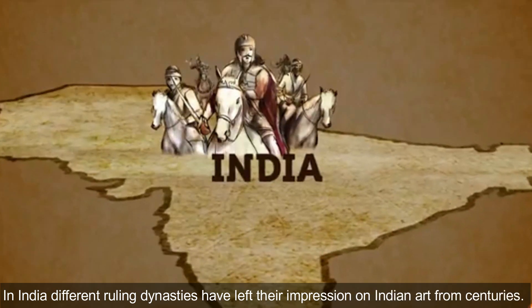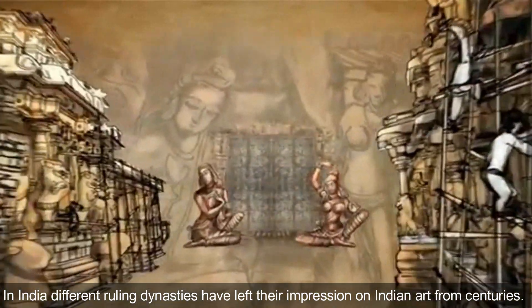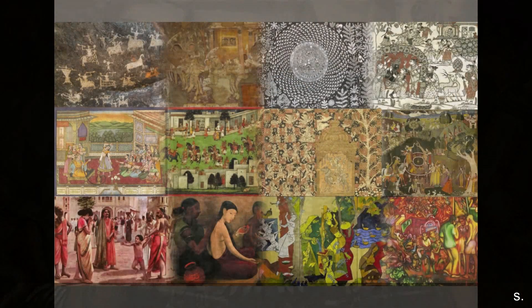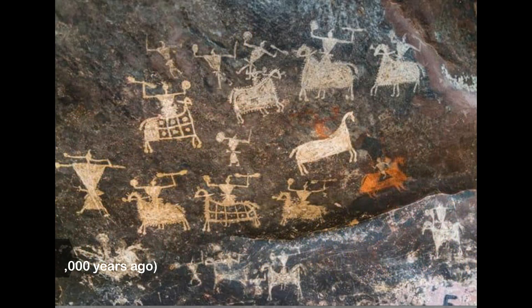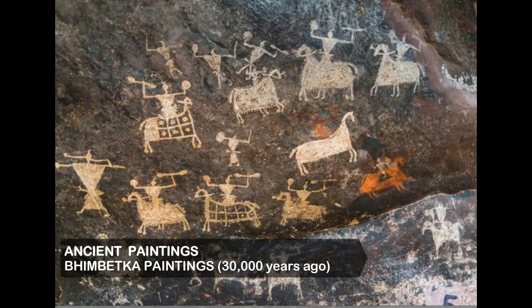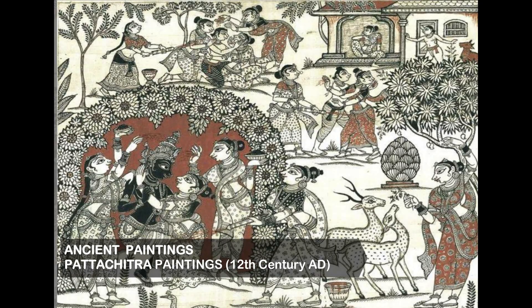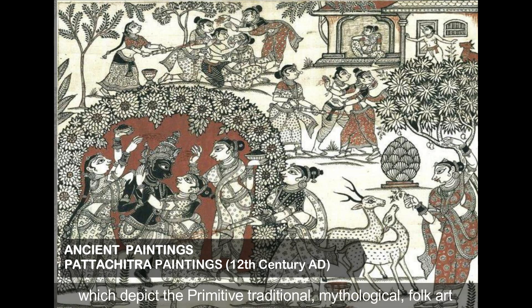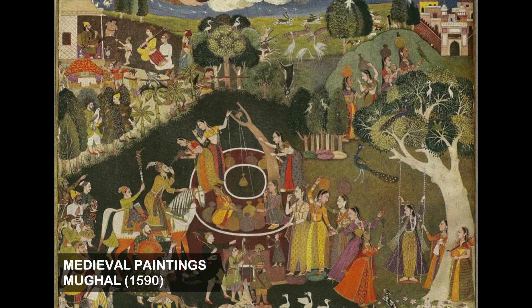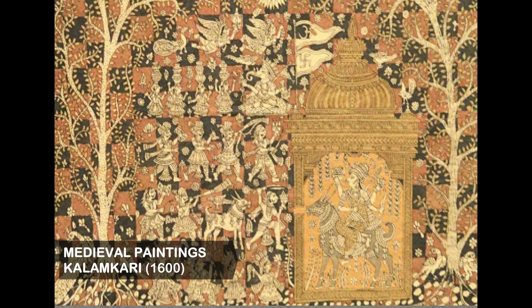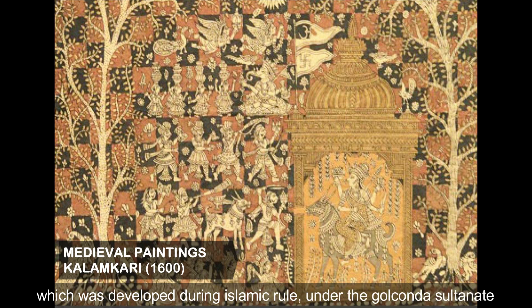In India, different ruling dynasties have left their impression on Indian art for centuries. The timeline of Indian art begins from the ancient paintings of Bimbetka from central India, Ajanta paintings from the Western Ghats, Warli art from Maharashtra, Patachitra from Bengal and Orissa which depict the primitive, traditional, mythological and folk art, Mughal miniature paintings from Northern India, and Kalamkari art which was developed during the Islamic Indian art period.